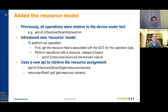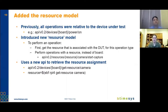The next thing to discuss is the resource model — probably the most important thing we worked on this last year. Previously, all operations performed in the API were relative to a board, as shown in the top line example with a board in the URL string. You'd have a board, an action, and maybe some parameters like power on. We introduced a new resource model so that besides addressing boards, you can address resources in the lab. You first get a resource associated with the operation type, then perform operations with that resource instead of the board — for example, a camera with start capture.